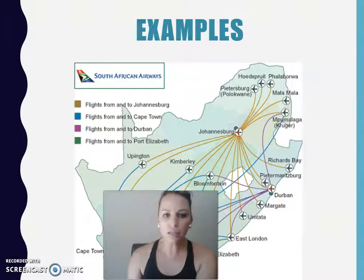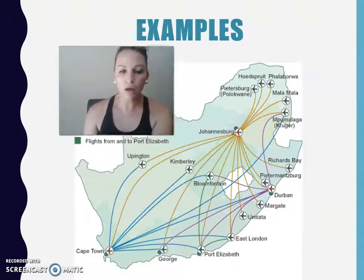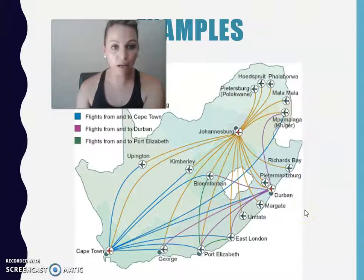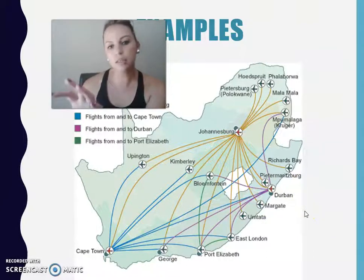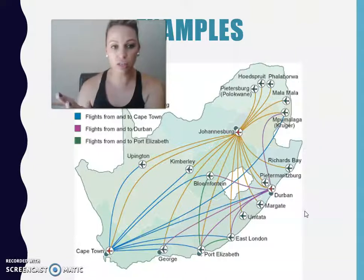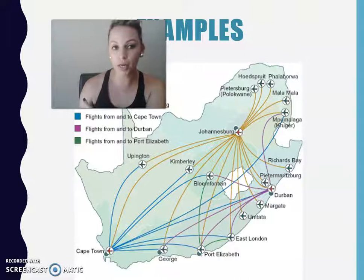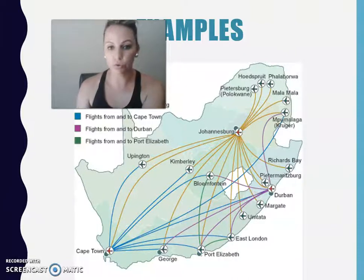Here's a map which indicates domestic flights. A teacher might give you a sketch or map like this and indicate a specific flight route, asking you to identify one of these route types.